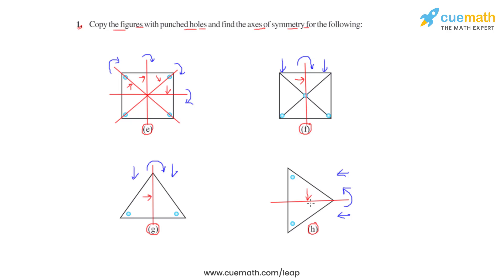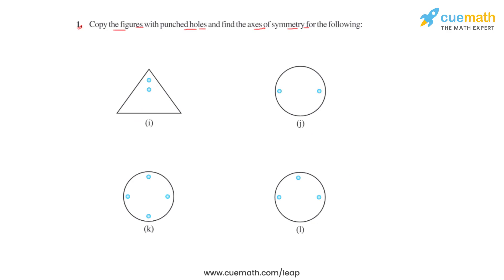Let us now see the next set of figures. Moving on to figure I: based on the position of the punched holes and the orientation of the figure, if we divide this figure into equal halves using a vertical line and fold about this line, we will again see that the two equal halves coincide, making this vertical line the axis of symmetry for figure I.